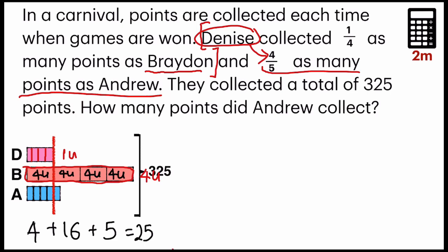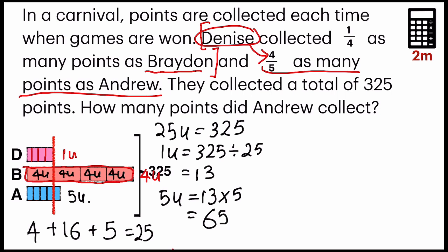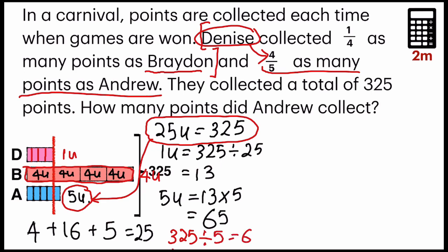We are finding Andrew, who has five units. We know that 25 units equals 325. There are two ways of solving. You can find one unit, which is 325 divided by 25 — you get 13 — and then find five units, which is 13 times 5, and you get 65. Another way: since you know 25 units contains five sets of five units, you can straight away take 325 divided by 5 and get 65.